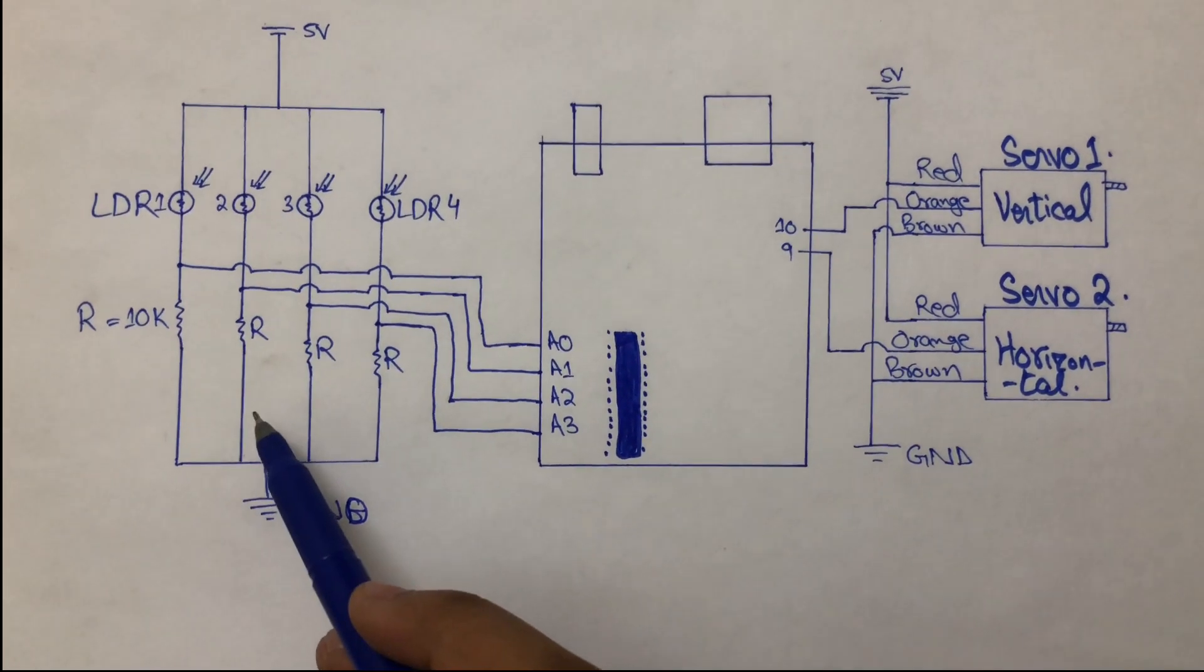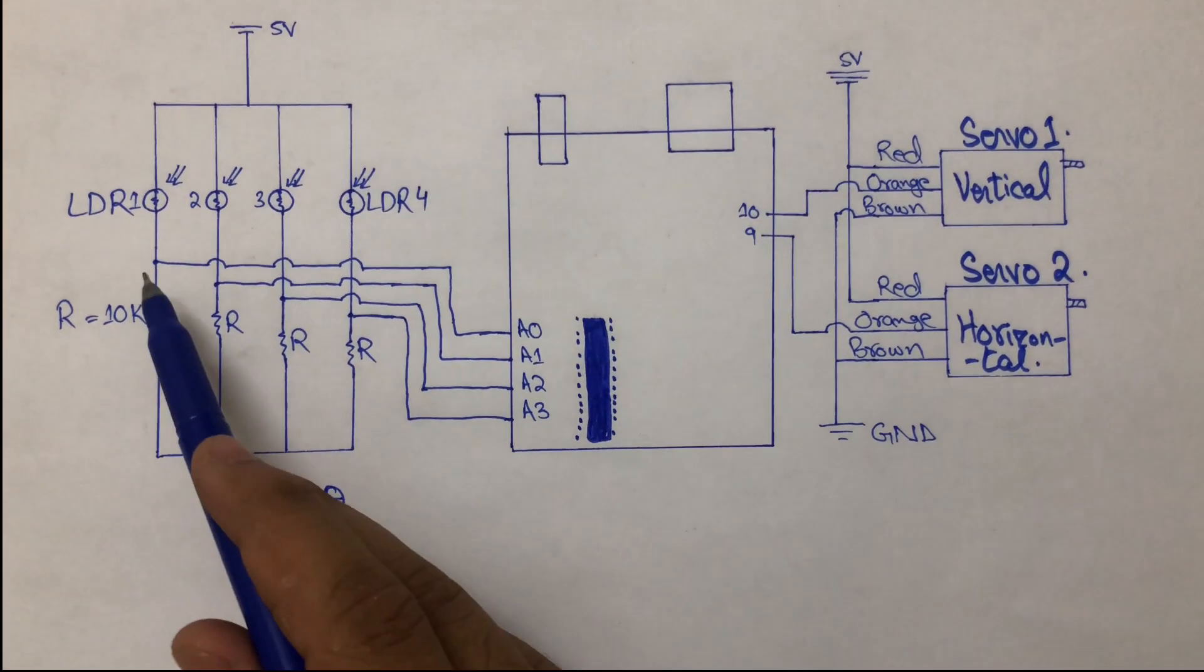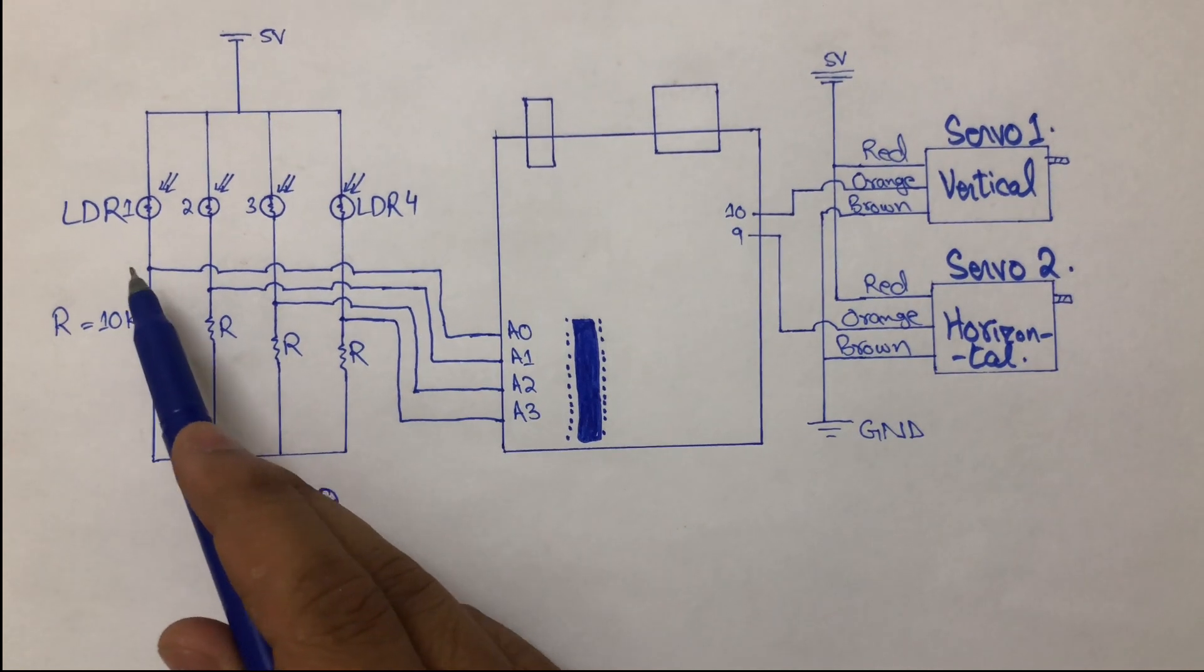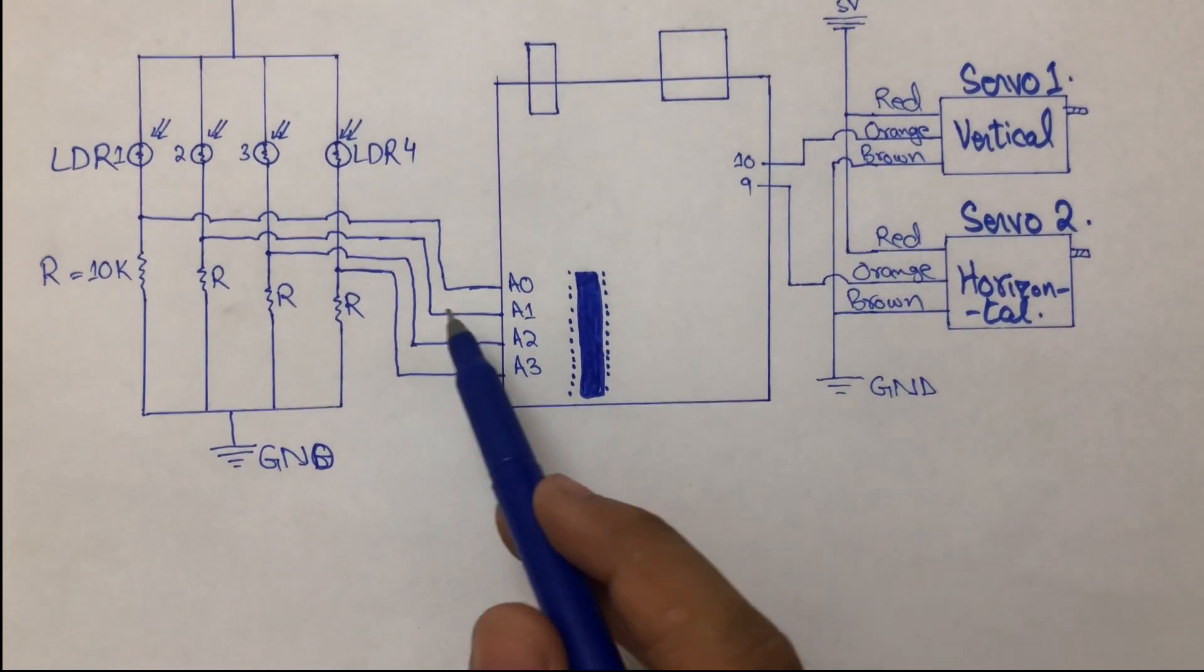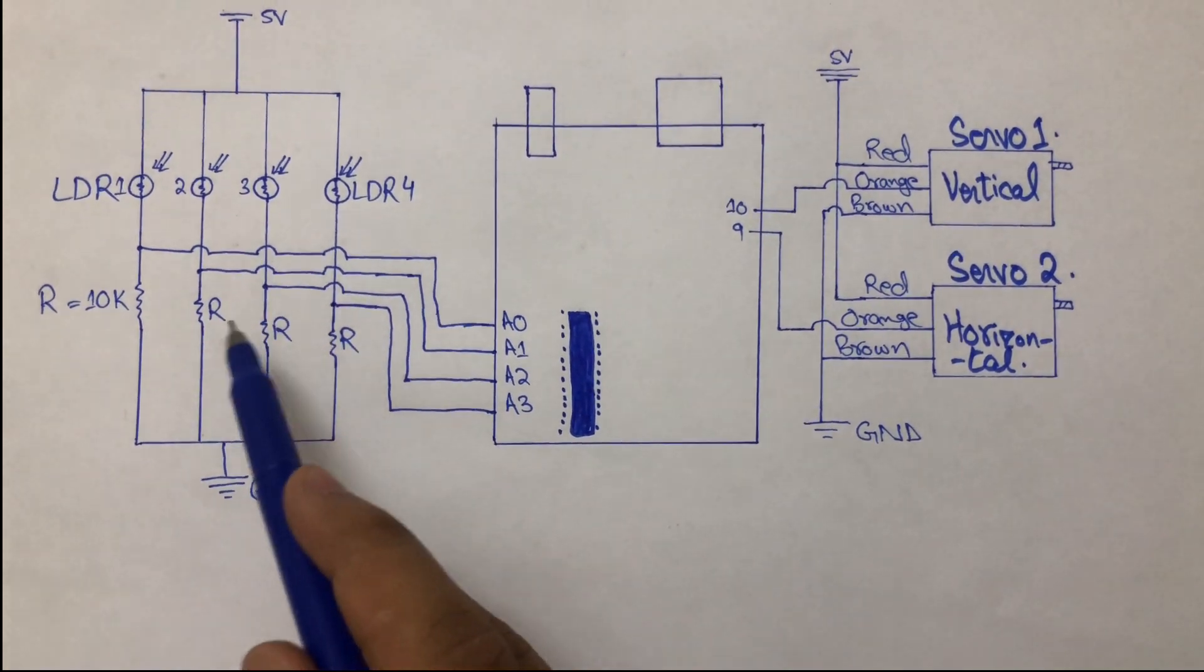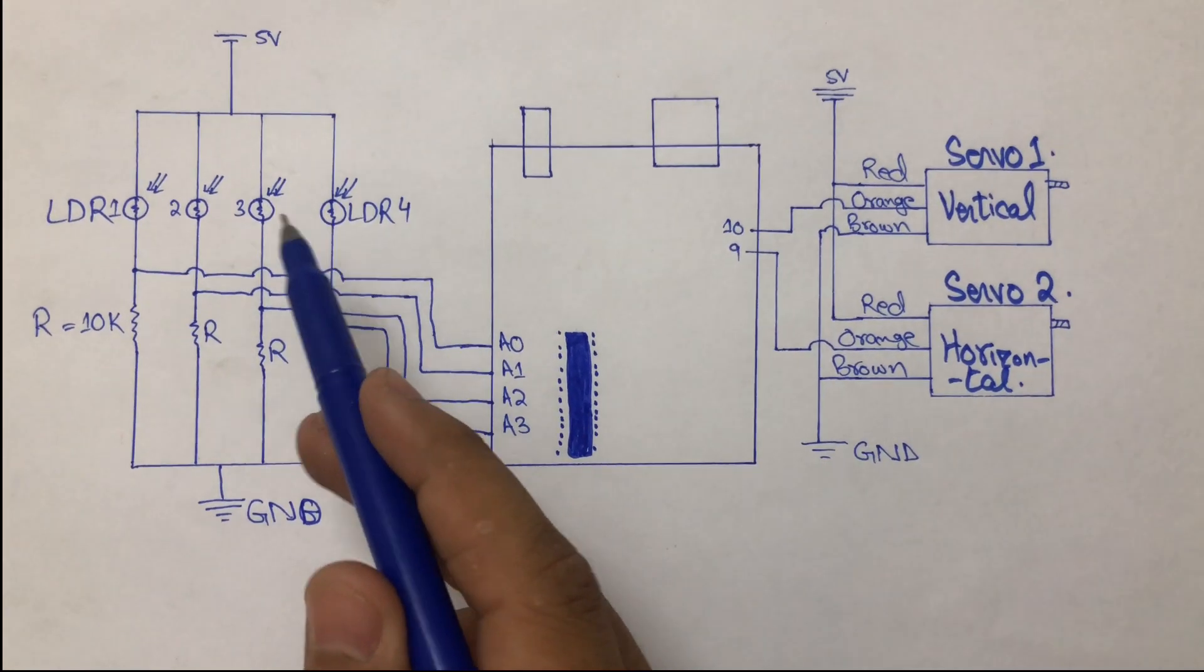On the other hand, the common point of the resistors are connected to ground. The points between the LDR and resistor are connected to the Arduino board to read the analog values of the LDR so that we can rotate our panel.